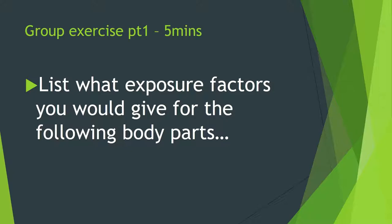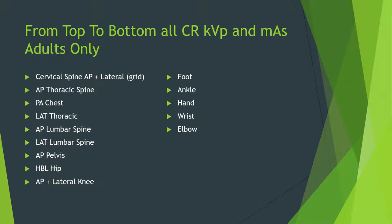I want you to list exposure factors for the following body parts. It doesn't really matter if you don't know what the exposure factors are — I want you to just make some considerations. Please list what you think might be reasonable exposure factors in terms of KVP and MAS for: a cervical spine AP and lateral, AP thoracic spine, PA chest, AP and lateral lumbar spine, AP pelvis, horizontal beam hip, AP lateral knee, foot, ankle, hand, wrist, and elbow.